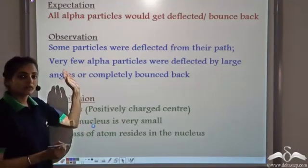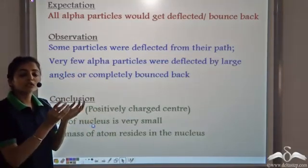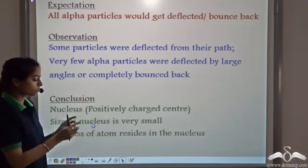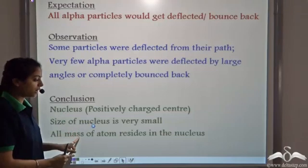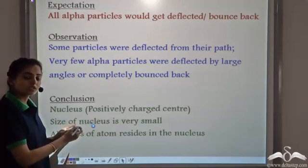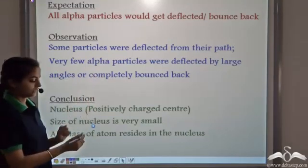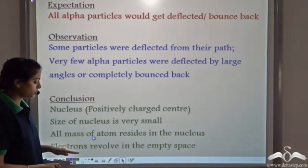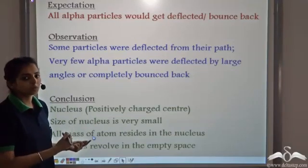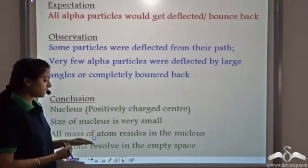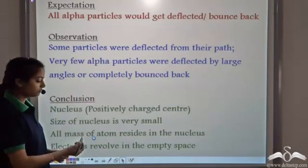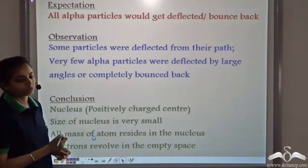Since most of the alpha particles went straight through the foil, all the mass of the atom is concentrated in a very small area — the nucleus — where the mass and the positive charge reside. The size of the nucleus is very small. Also, he concluded that electrons revolve in the empty space. Since electrons have negligible mass compared to protons, they do not deflect the alpha particles, and so they revolve in the empty space around the nucleus.